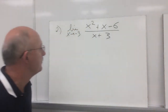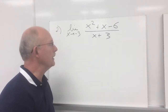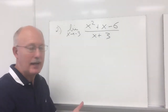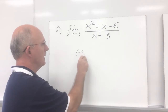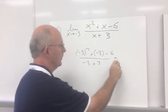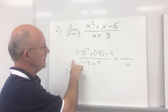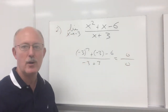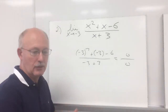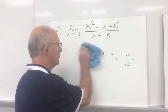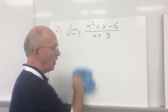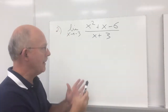Let's try the next one. We're looking at the limit as x approaches negative three of x squared plus x minus six over x plus three. Let's try direct substitution: negative three squared plus negative three minus six over negative three plus three gives us nine minus nine, which is zero, over zero. Zero over zero indicates the presence of a hole. All the following examples are going to have holes in them.